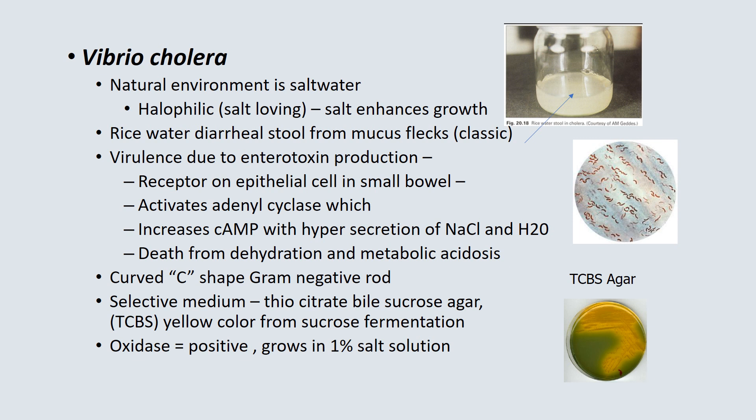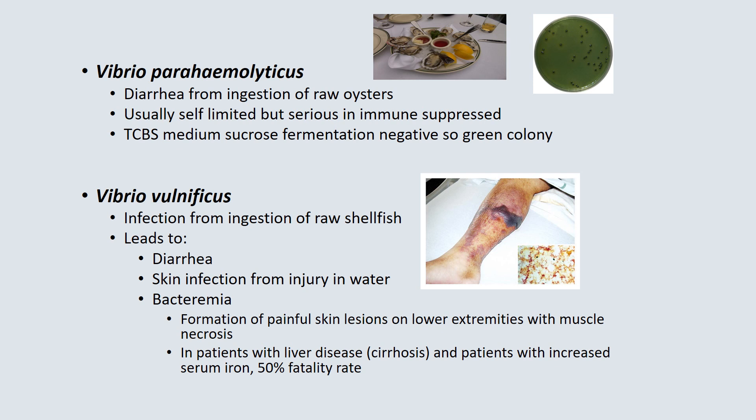Vibrio cholerae is a curved C-shaped gram-negative rod. It grows on thiosulfate-citrate-bile-sucrose (TCBS) agar, which is green-colored. When Vibrio cholerae grows on TCBS, it ferments sucrose and turns yellow. It is also oxidase positive and loves salt, growing well in a 1% salt solution. Vibrio parahaemolyticus is a less serious diarrheal disease, usually from ingestion of raw oysters, and can be self-limited. It also grows on TCBS medium but does not ferment sucrose, so the colony remains green.